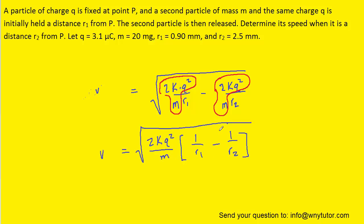We're now ready to plug in all the known values. Just note that the charge has to be multiplied by 10 to the minus 6 to put it into coulombs. The mass needs to multiply by 10 to the minus 6 as well to put it into kilograms, and then the distances will be multiplied by 10 to the minus 3 to put them into meters.